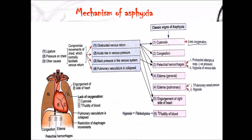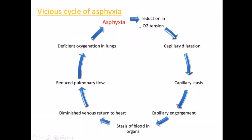The mechanism of asphyxia: in cases of ligature pressure on the chest and other causes, there is obstructed venous return, acute rise in venous pressure, back pressure in the venous system, and pulmonary vasculature collapse. This leads to various classical signs of asphyxia — cyanosis, congestion, petechial hemorrhages, generalized edema, possibly pulmonary edema, engorgement of the right heart, and increased fluidity of blood, because hypoxic conditions stimulate fibrinolysis.